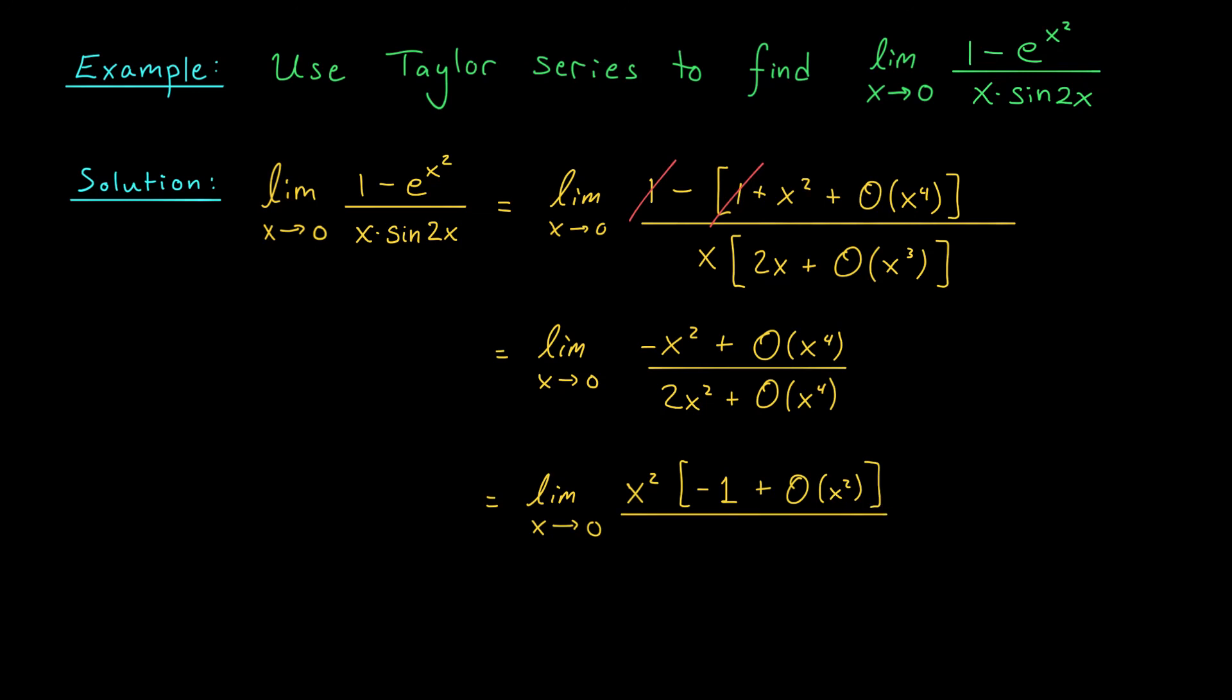Now my x squared cancel. I have the limit as x goes to zero of minus one plus big O of x squared divided by two plus big O of x squared. When x goes to zero, those big O terms go to zero as well. I have a final answer of minus one half.